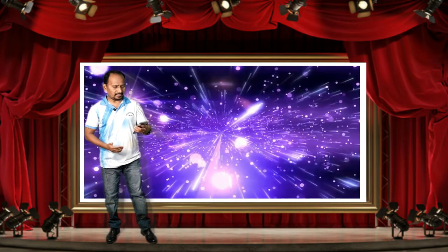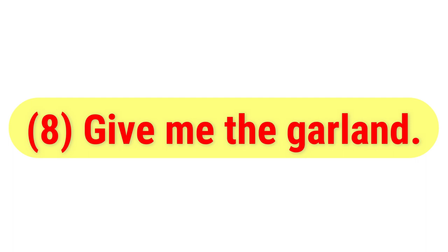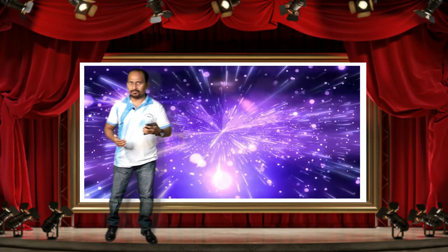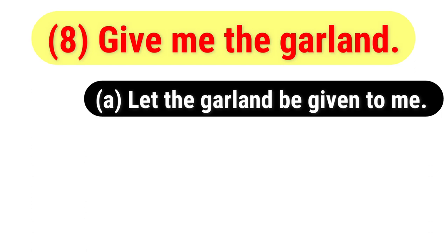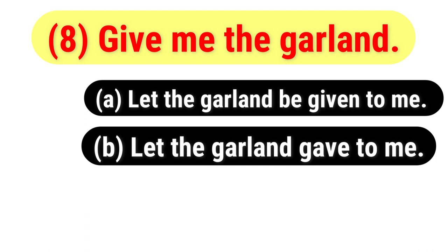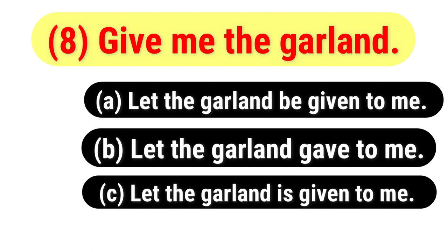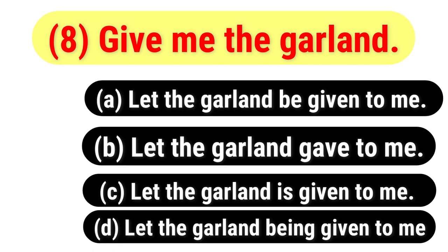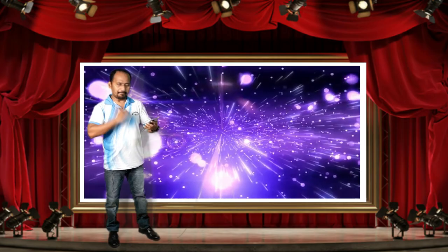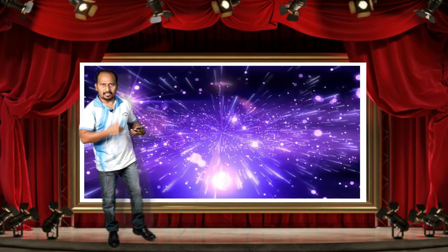Question eight: 'Give me the garland.' This is an imperative sentence. You have to change it to passive voice. The options are: A) Let the garland be given to me; B) Let the garland gave to me; C) Let the garland is given to me; D) Let the garland being given to me. Your time begins now.